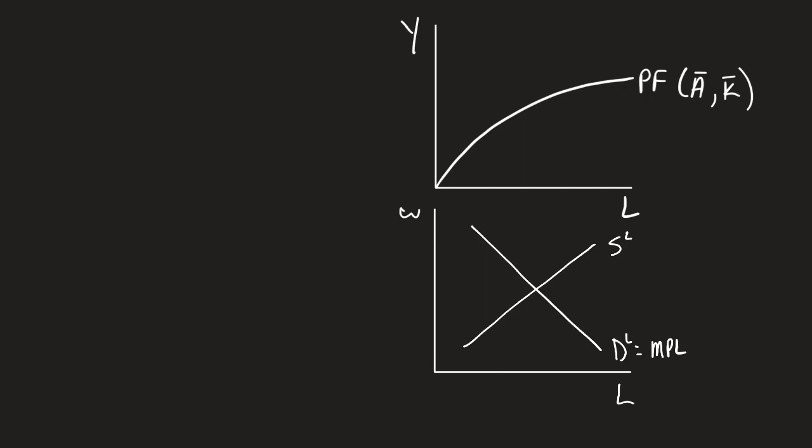What we notice here is we have three unknowns. We don't know what the output is, we don't know what the wages are, and we don't know what the overall amount of labor is.